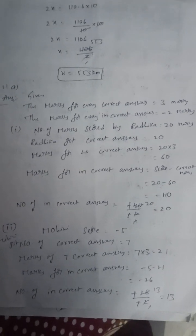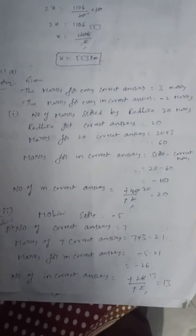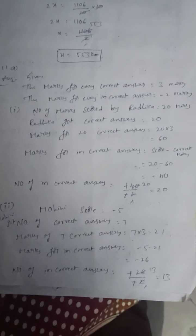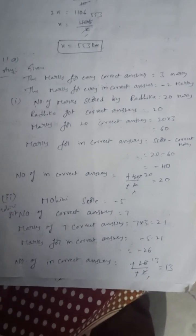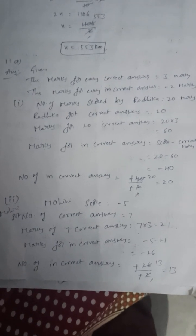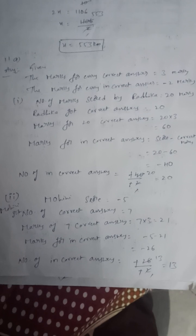Ninth one: The marks for every correct answer is 3 marks, for every incorrect answer is minus 2 marks. Radhika scored 20. Radhika got 20 correct answers, so marks for 20 correct answers is 60. Marks for incorrect is minus 40. Number of incorrect answers is 20.